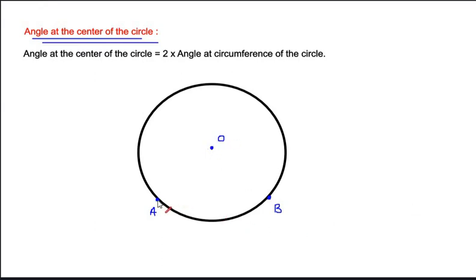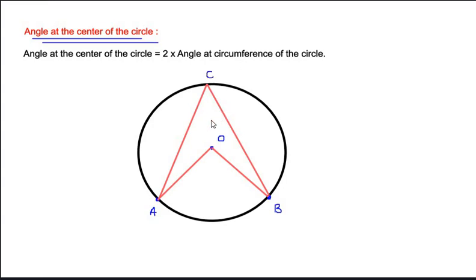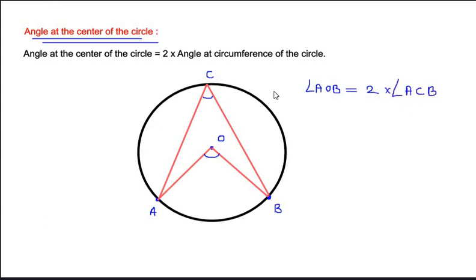Let me draw an angle made by these two points with center O, and the same two points A and B make an angle with the circumference of the circle — let us take that point as C. According to the theorem, angle AOB at the center is always equal to two times the angle at the circumference, which is angle ACB. Now let us use this theorem to solve the example.